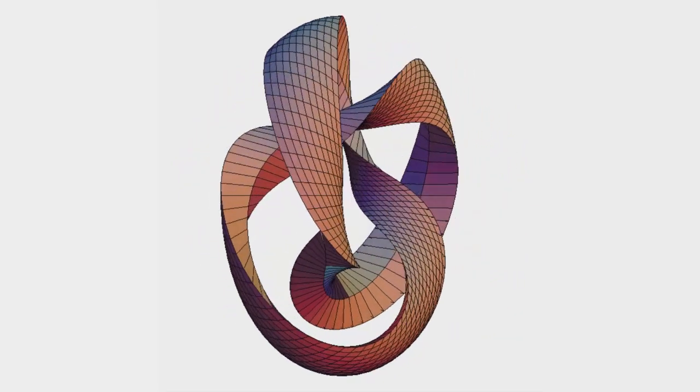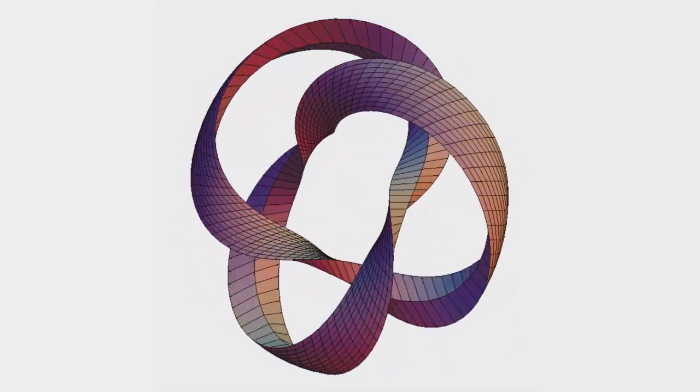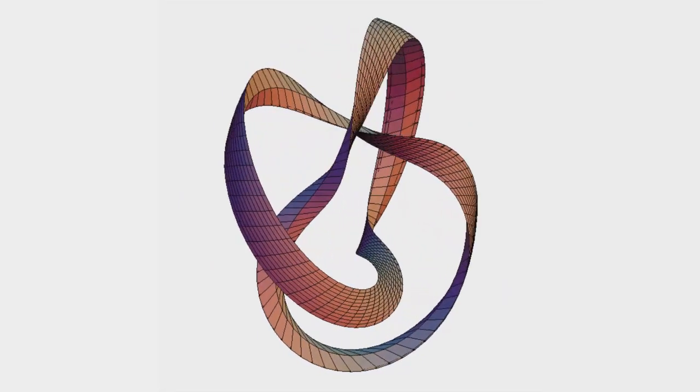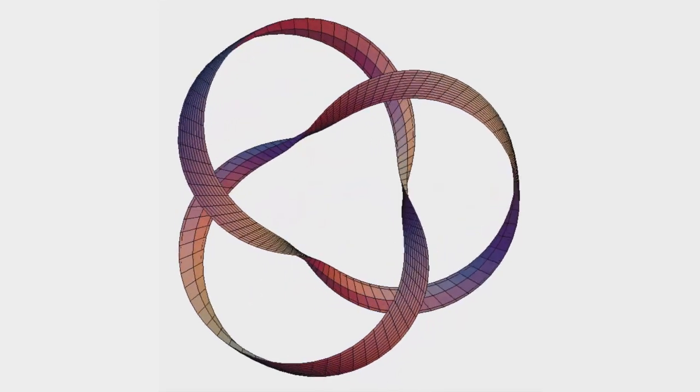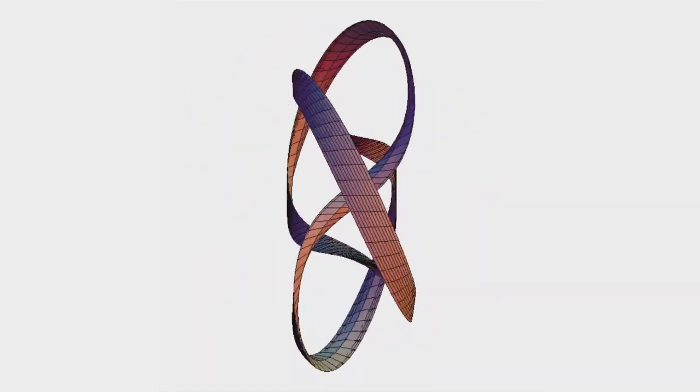This makes what topologists call the 3-2 torus knot, because you can think of wrapping a string on the surface and it goes three times through the hole while going two times around the hole. And it's the same as the trefoil.